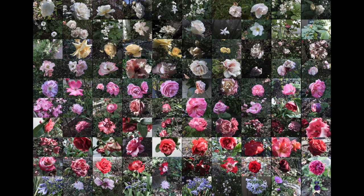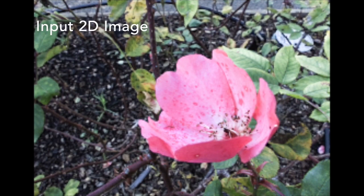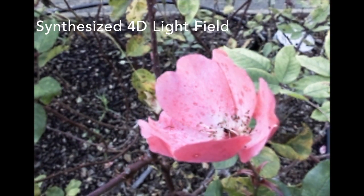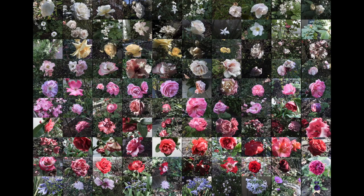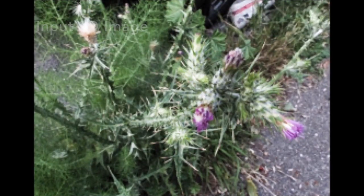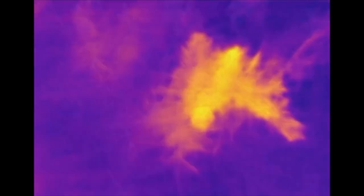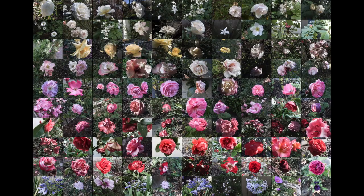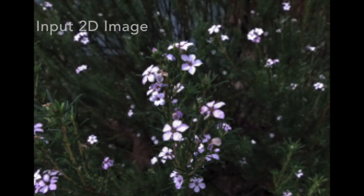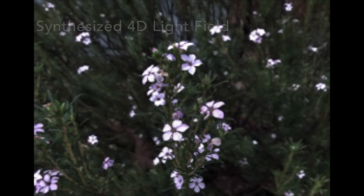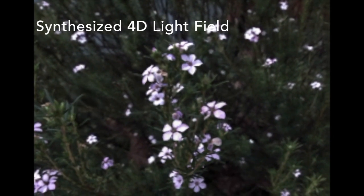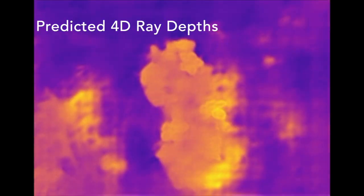Our 4D light fields and ray depths synthesized from just a single 2D image convey a rich and convincing sense of three-dimensionality. Notice the fine details and curvature of the flower stems and petals. This example of thistle flowers demonstrates how our algorithm has learned to infer complex 4D depth and occlusion details. In this example with dense foliage and small flowers, notice the realistic parallax and continuous range of predicted depths.